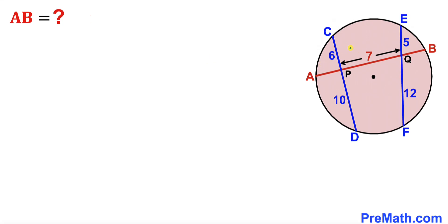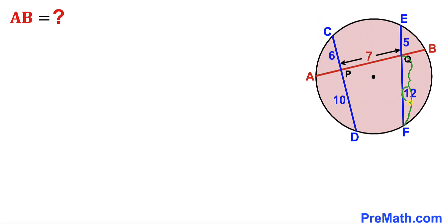Welcome to pre-math. In this video we have got these chords fully confined in this pink circle. We have got chords A, B, C, D, E, and F and they intersect each other at point P and point Q. As a result, segment CP is 6 units, segment PD is 10, segment EQ is 5 units, and segment QF is 12 units. Moreover, segment PQ is 7 units.